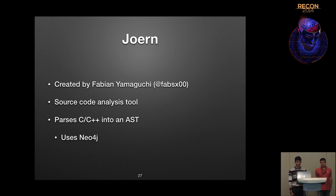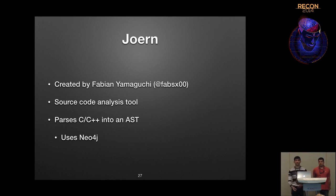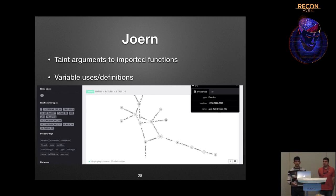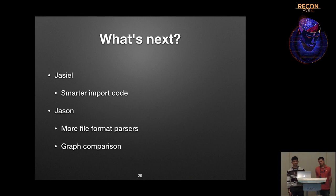As far as what's been published as more finished work, there's Joern by Fabian Yamaguchi. It's a source code analysis tool, so you do need source. It parses C and C++ into an abstract syntax tree and creates definition-use chains for all variables. It uses Neo4j, which is another reason I like it. Some dependency chains get broken at imported functions, but you can work around that by tainting arguments to specify that a particular function call will result in a variable being redefined. Joern has actually been used to find around 18 vulnerabilities in the Linux kernel.